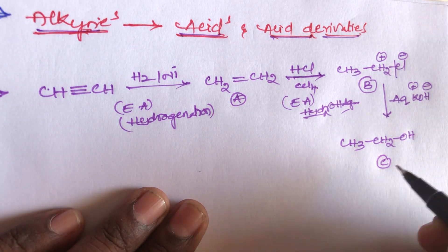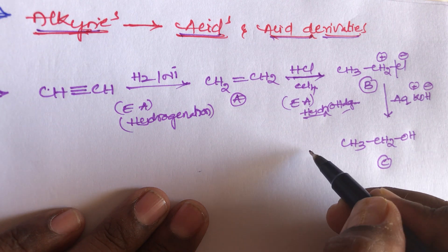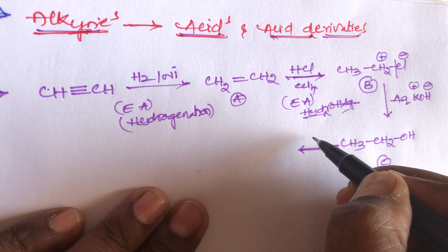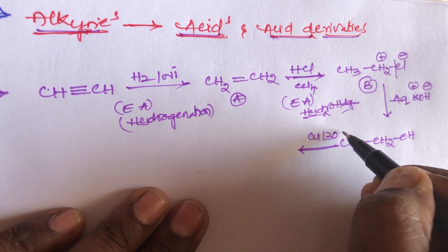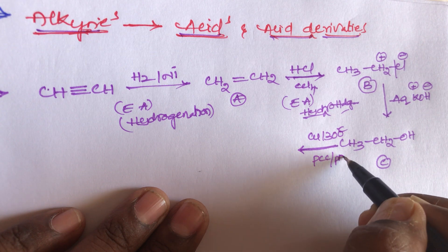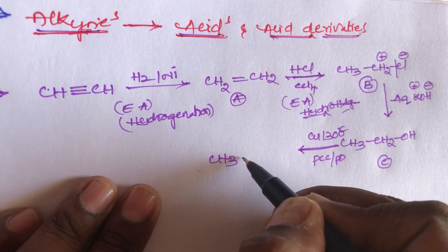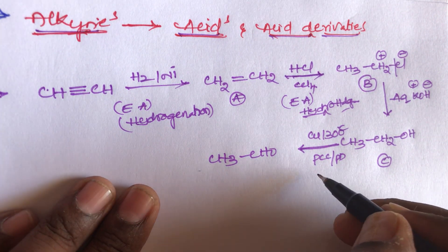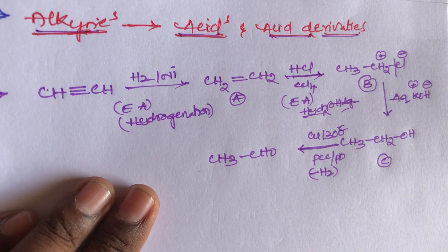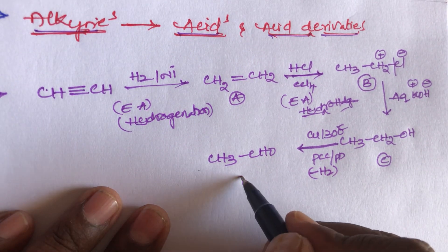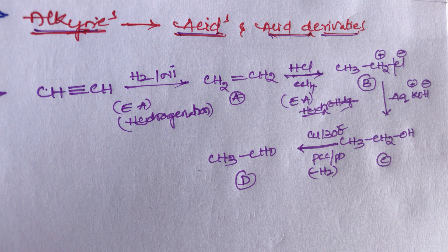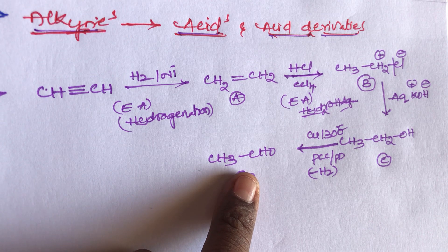This is compound C. This ethyl alcohol reacts with copper at 300 degrees centigrade, or PCC or PCC system. We get aldehyde — CH₃CHO will be formed. The role of copper is dehydrogenation, that is removal of hydrogen. Copper, PCC, and PDC are moderate oxidizers that oxidize primary alcohols to give aldehyde.